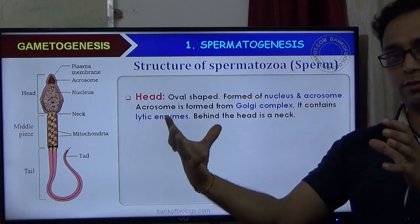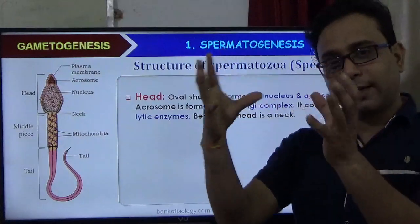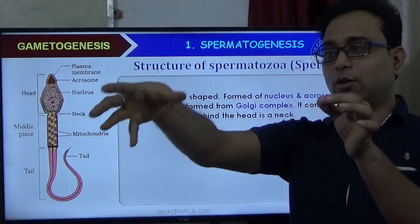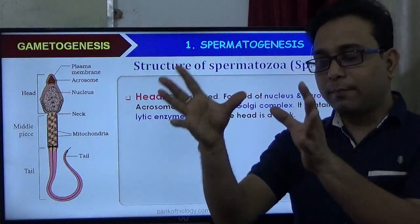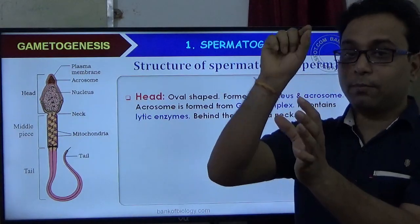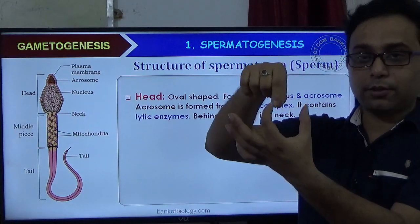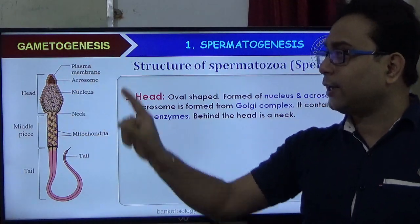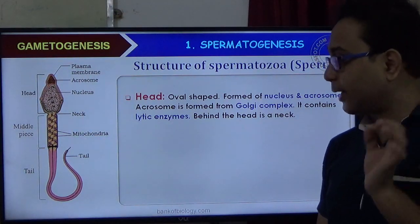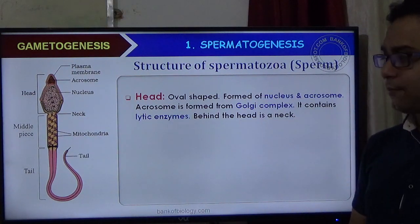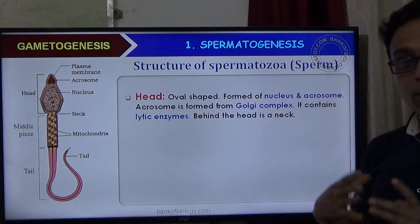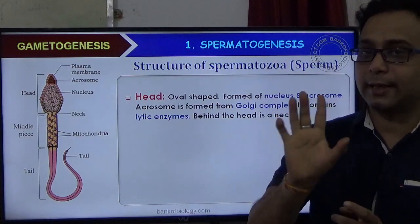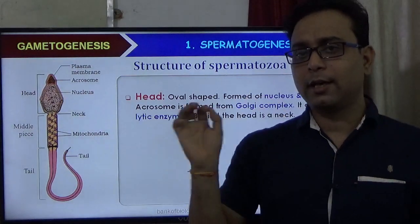During fertilization, these enzymes are secreted to penetrate the outer membrane of the egg. This is why the sperm can enter and deliver the nucleus. The acrosome plays a very important role in fertilization. It contains lytic enzymes that help break down the outer membrane of the secondary oocyte.